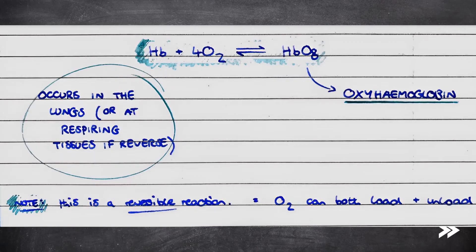We can portray the reaction of oxygen binding to haemoglobin in an equation: haemoglobin plus four oxygen molecules goes to HbO8, which is known as oxyhaemoglobin.